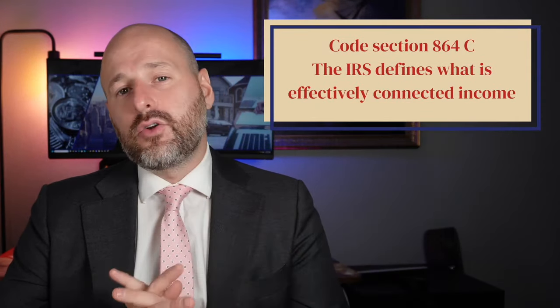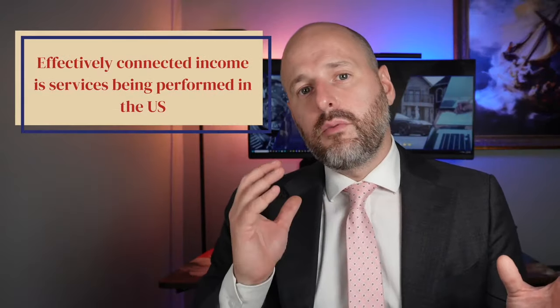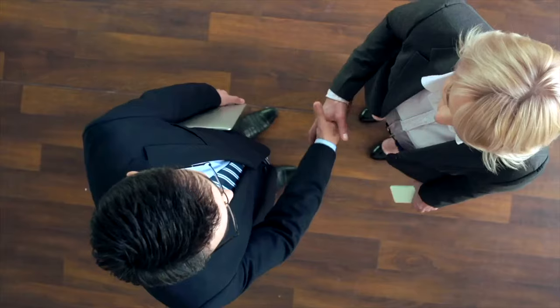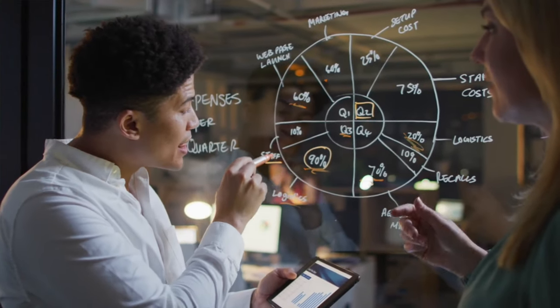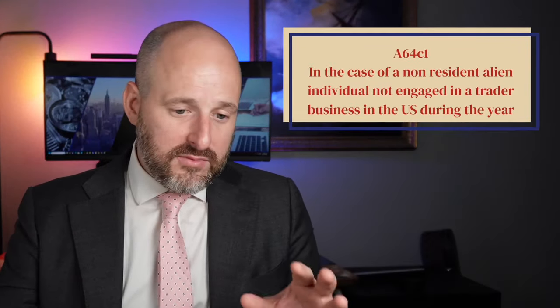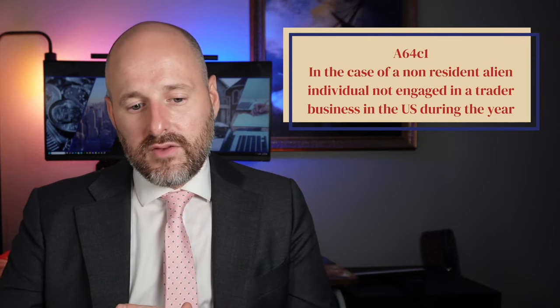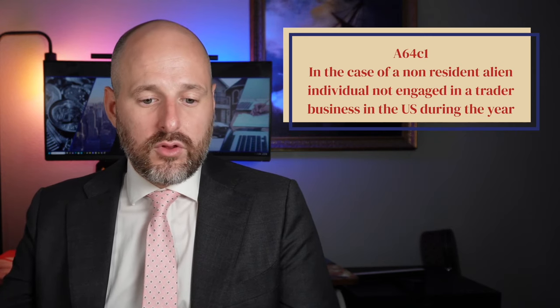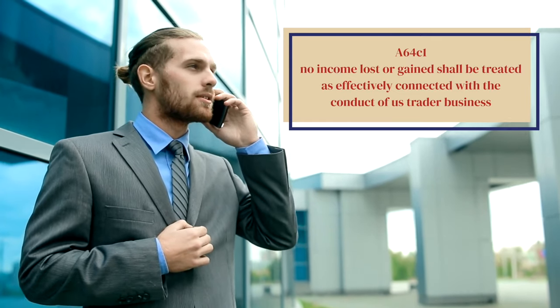Now we have to determine what is subject to tax. In Code Section 864C, the IRS defines what is effectively connected income. Effectively connected income with a U.S. trade or business is what is subject to tax. This generally means services being performed inside the United States — flying to the U.S., going to a client site, and providing services in person. If you have an office and actual employees in the U.S., you likely have effectively connected income. Section 864C(1) states that a non-resident alien individual not engaged in a trade or business in the U.S. during the year shall have no income treated as effectively connected with a U.S. trade or business.